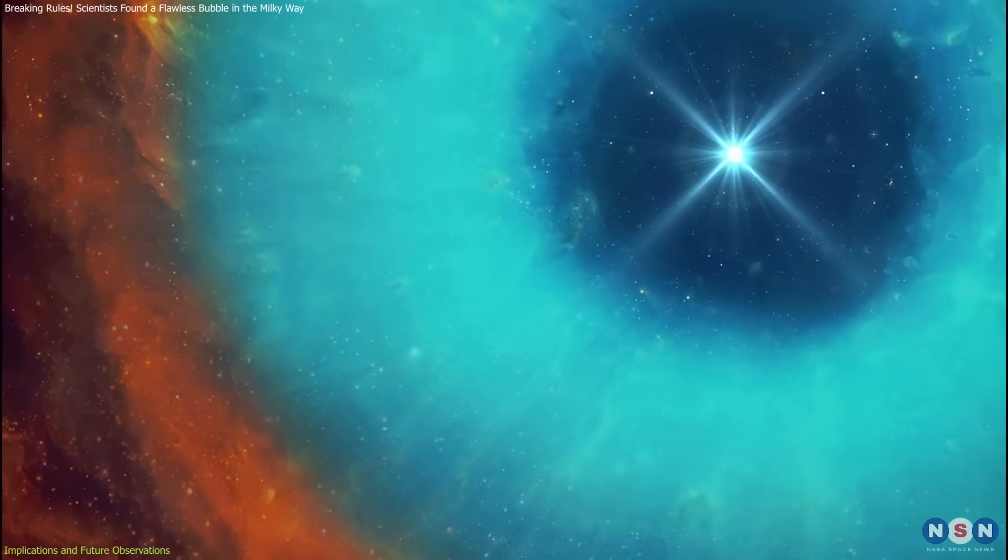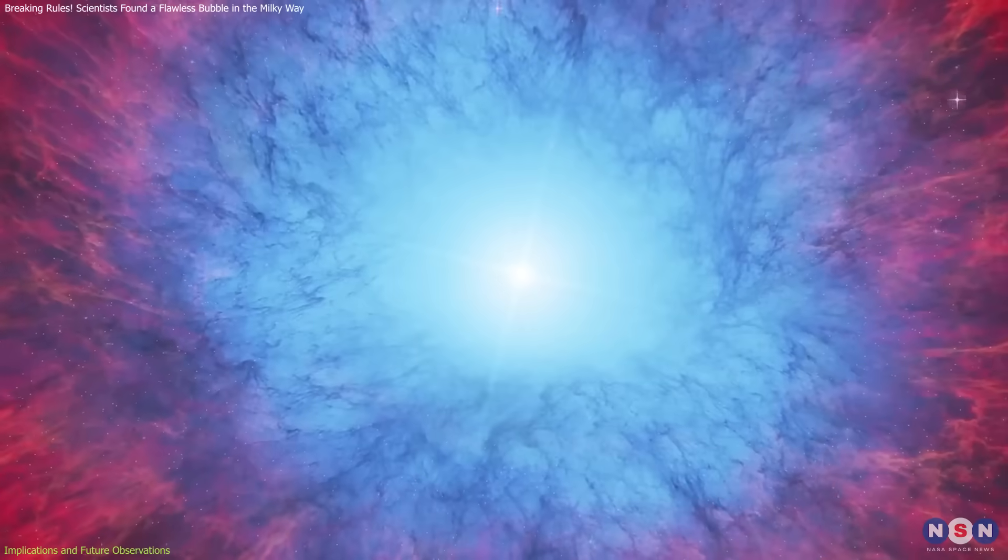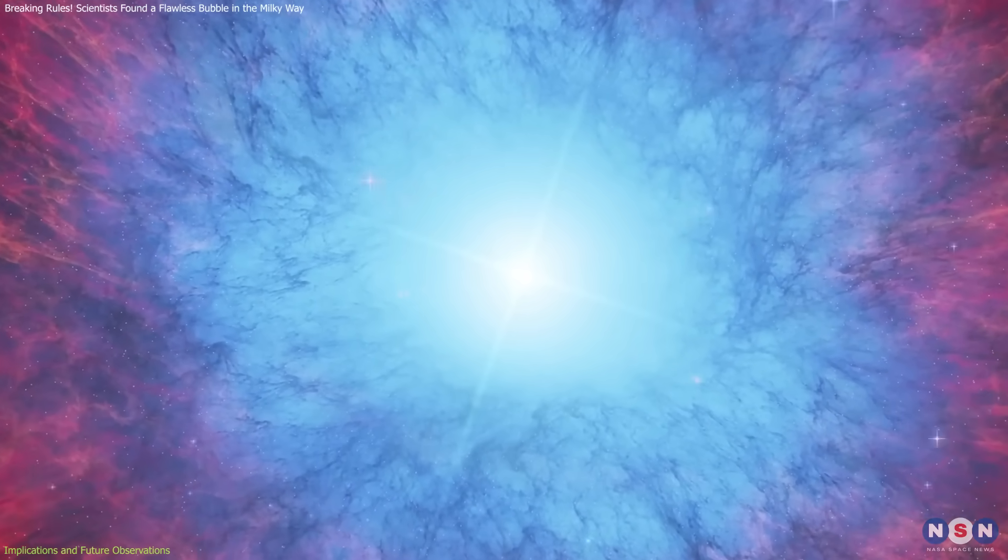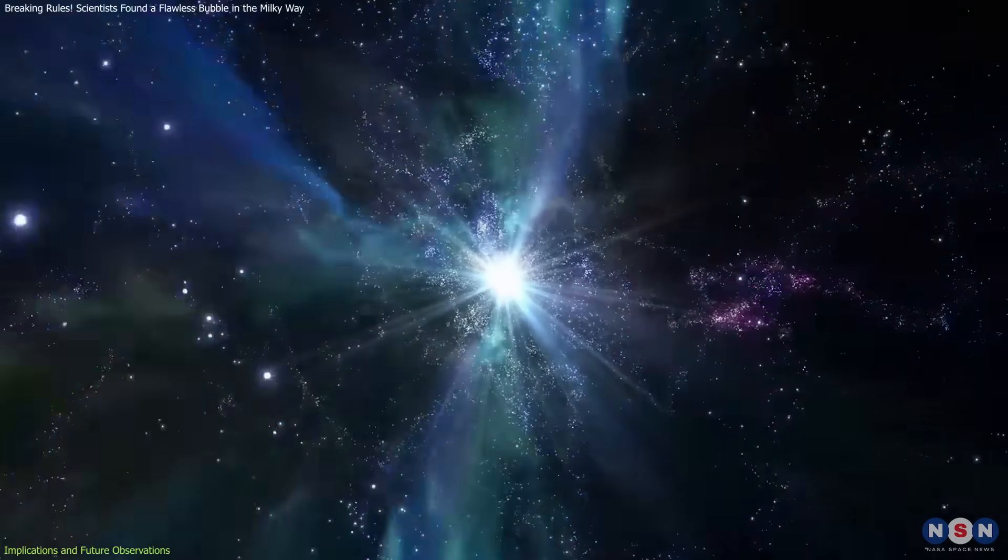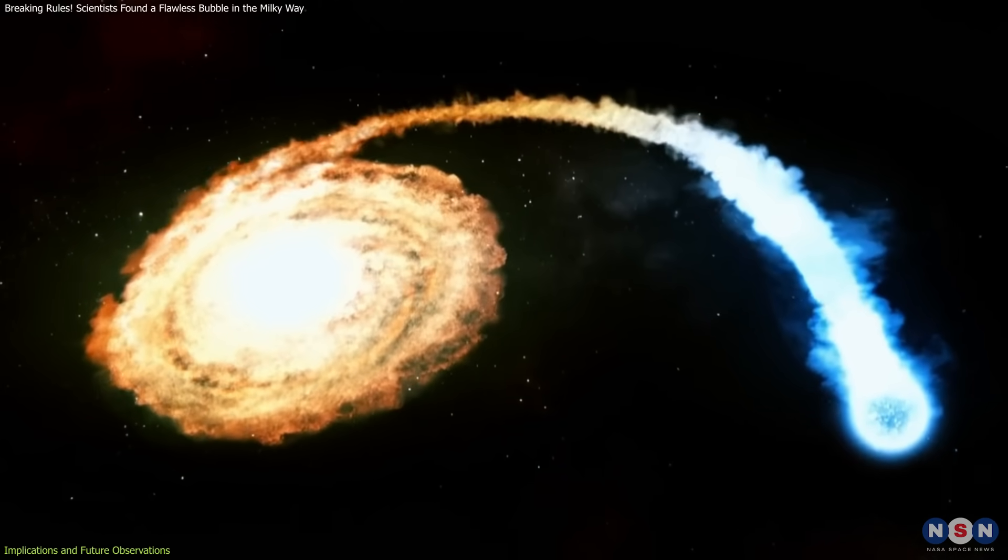Another major question is whether a central compact object exists. If astronomers can identify a faint white dwarf or neutron star at the center, it would provide strong evidence for a specific type of supernova origin, possibly confirming the Iax hypothesis.